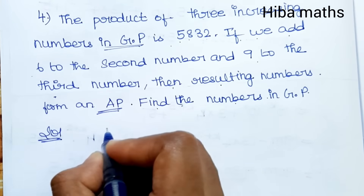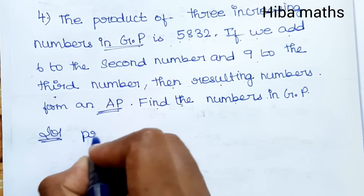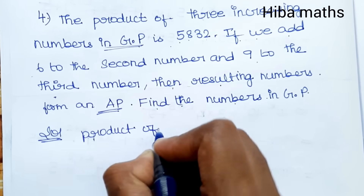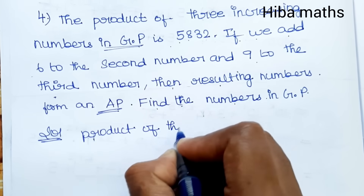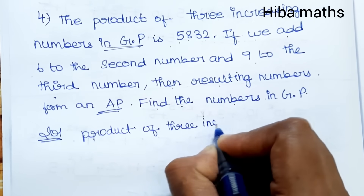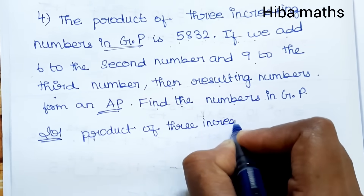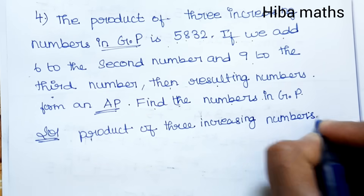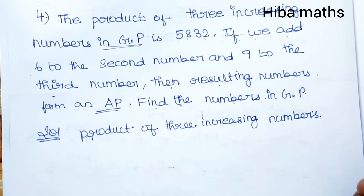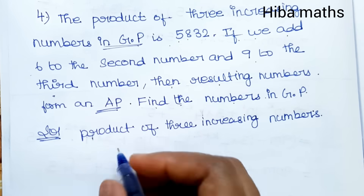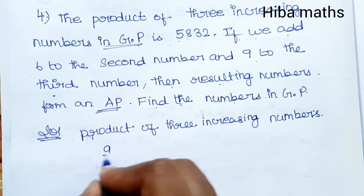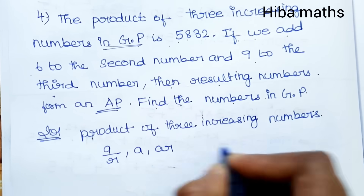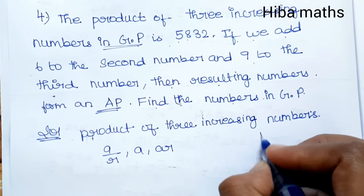First, given is the product of 3 increasing numbers in GP. For three consecutive numbers in GP, we take them as a/r, a, and ar.